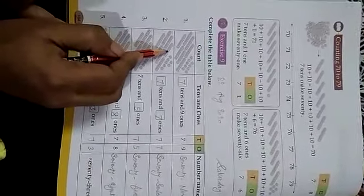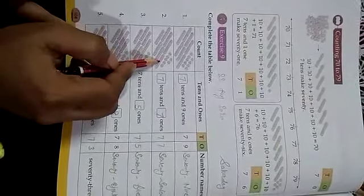Same second one sum. 10 plus 10, 20. 20 plus 10, 30. 30 plus 10, 40. 40 plus 10, 50. 50 plus 10, 60. 60 plus 10, 70.